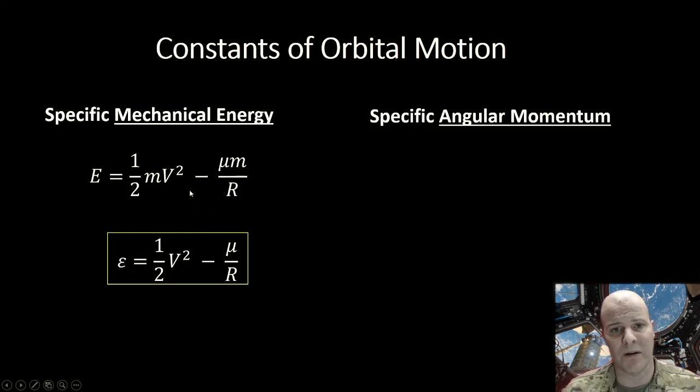Instead of having to take into account the mass of our satellite the entire time, we divide that out, and that's where we get this specific mechanical energy from. So specific mechanical energy is defined as epsilon equals v squared over 2 minus mu over r.